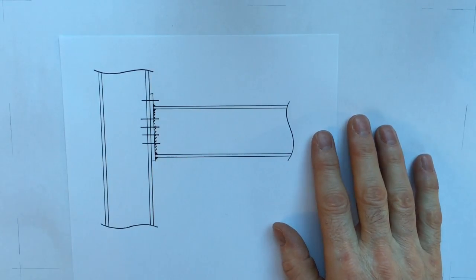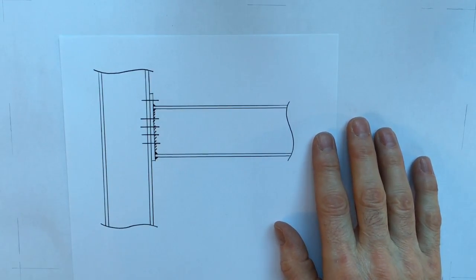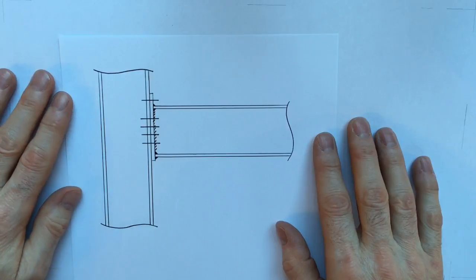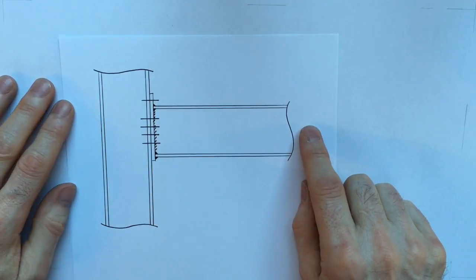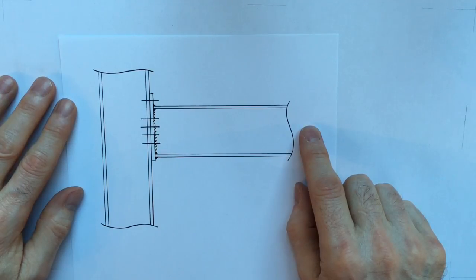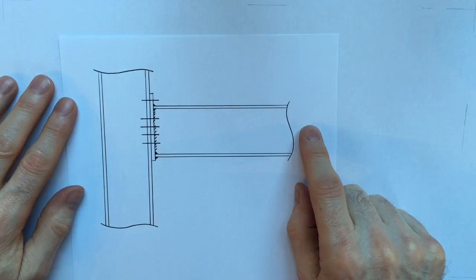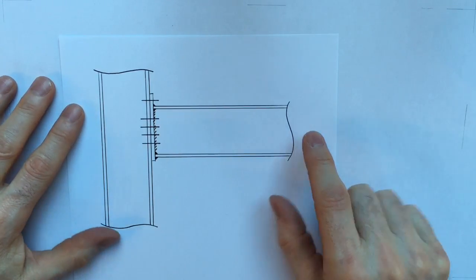In the UK it's normal practice to join rolled steel sections such as these I-beams using a mixture of welds and bolts. Typically the welding takes place in the workshop and the bolting takes place on site.